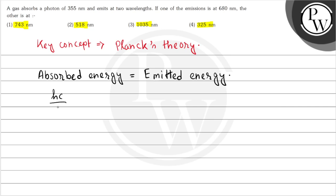Absorbed energy is given by hc by lambda and emitted energy, since we have two emissions, this will be hc by lambda 1 plus hc by lambda 2.